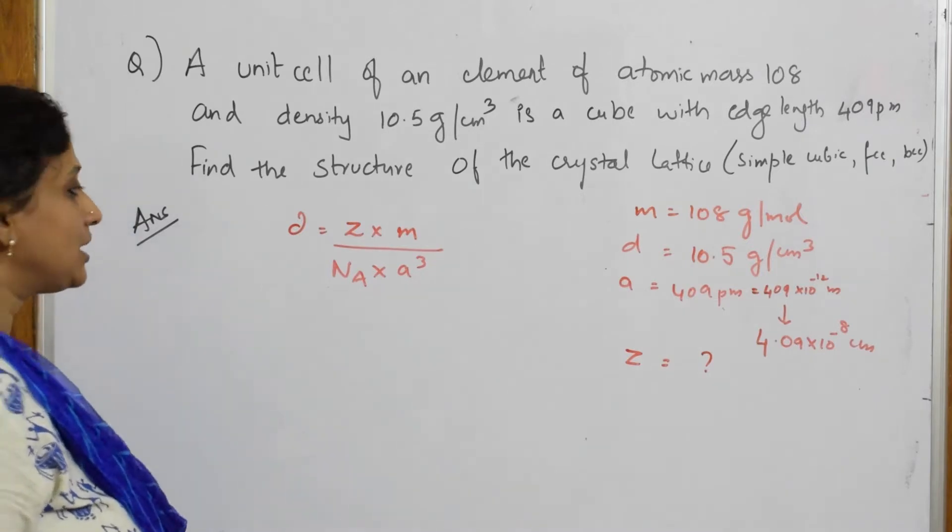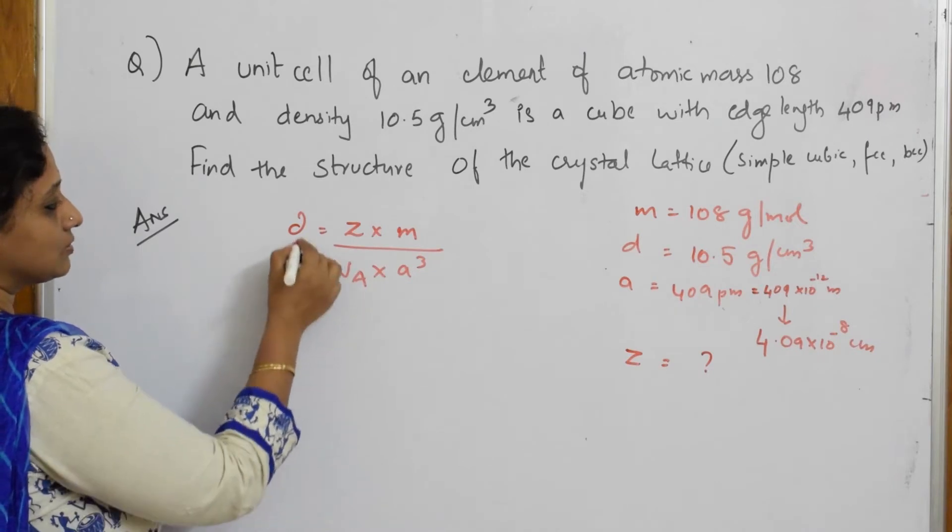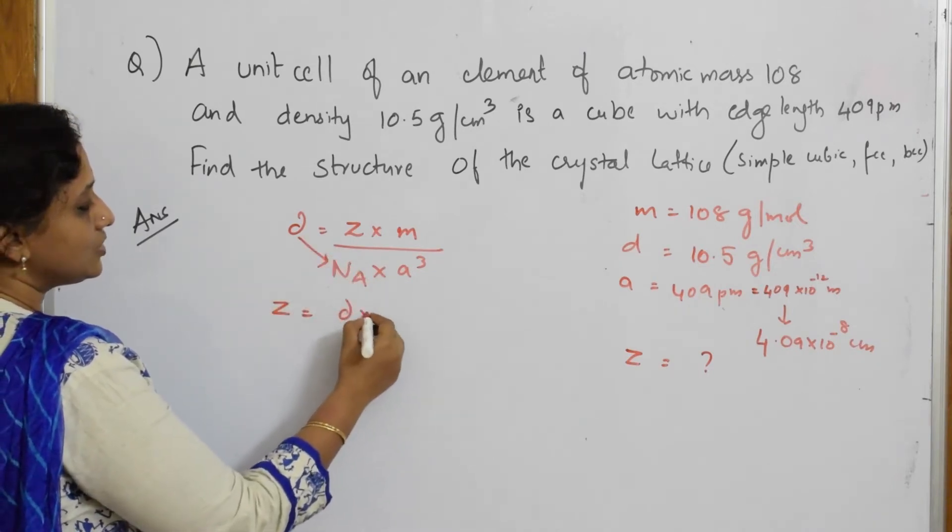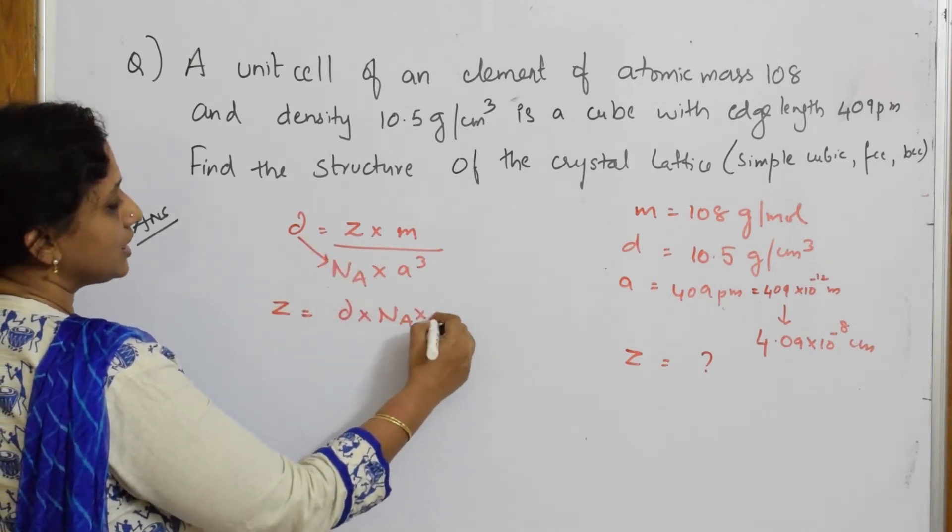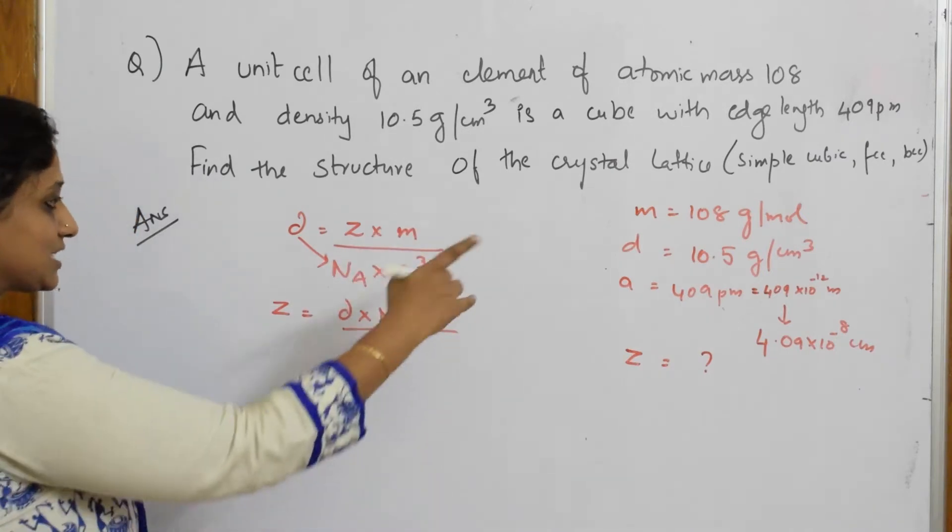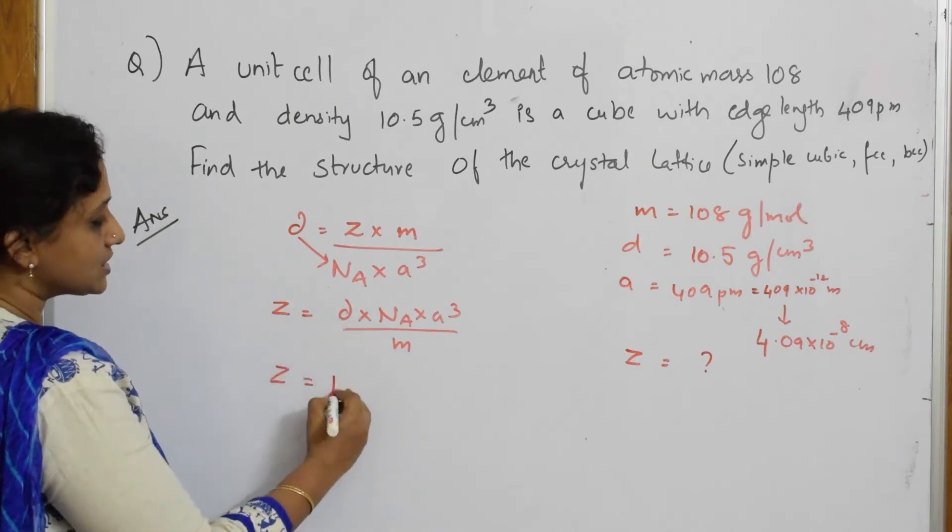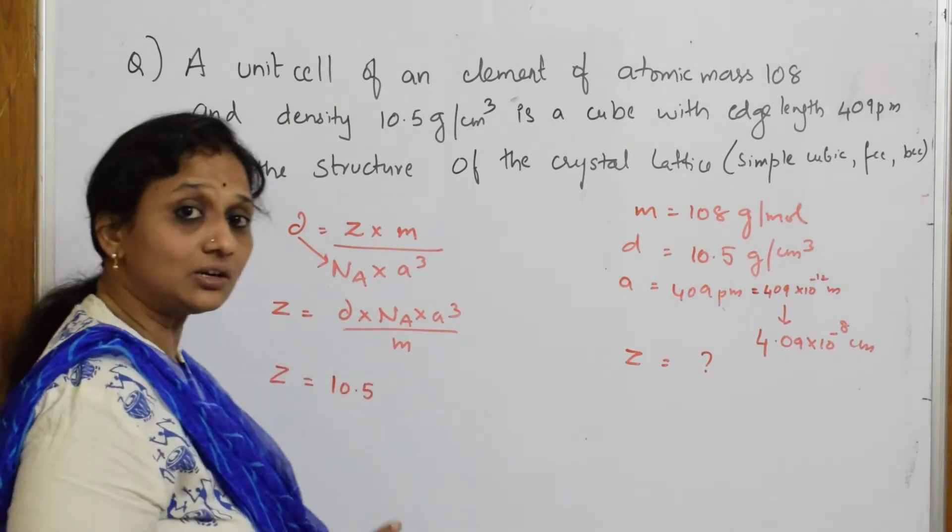Yes, this is what. Now, what should I find out? I have to find out Z. Take this Z out. Cross multiply D into Na into A cube divided by your mass. Now, let us substitute the values. Z is equal to density is how much? It is 10.5. Please write along with the units.